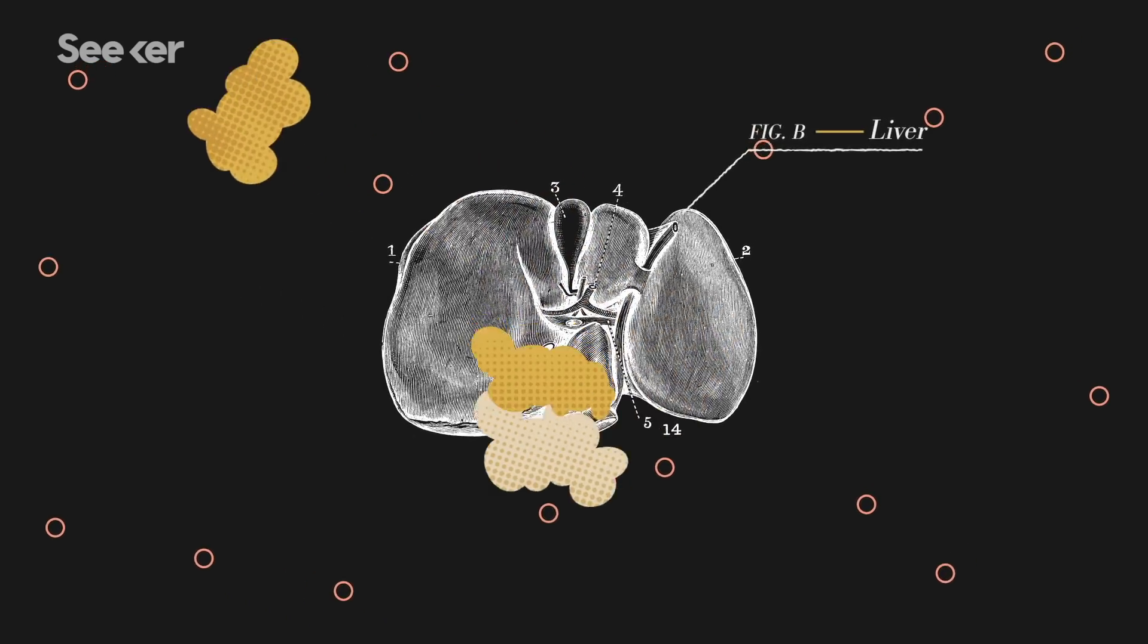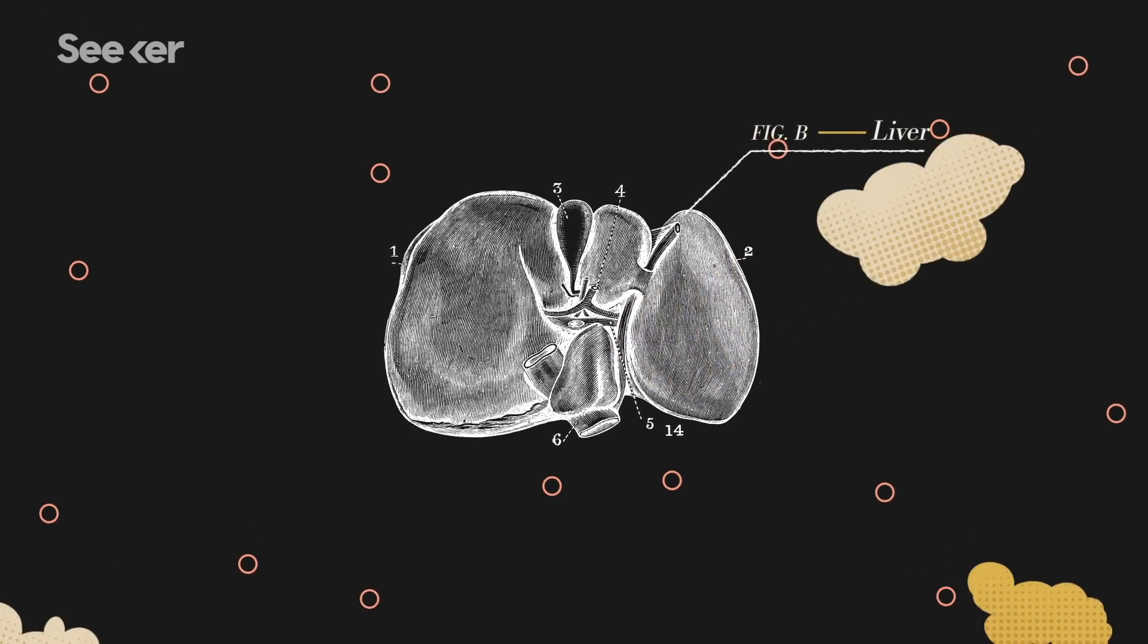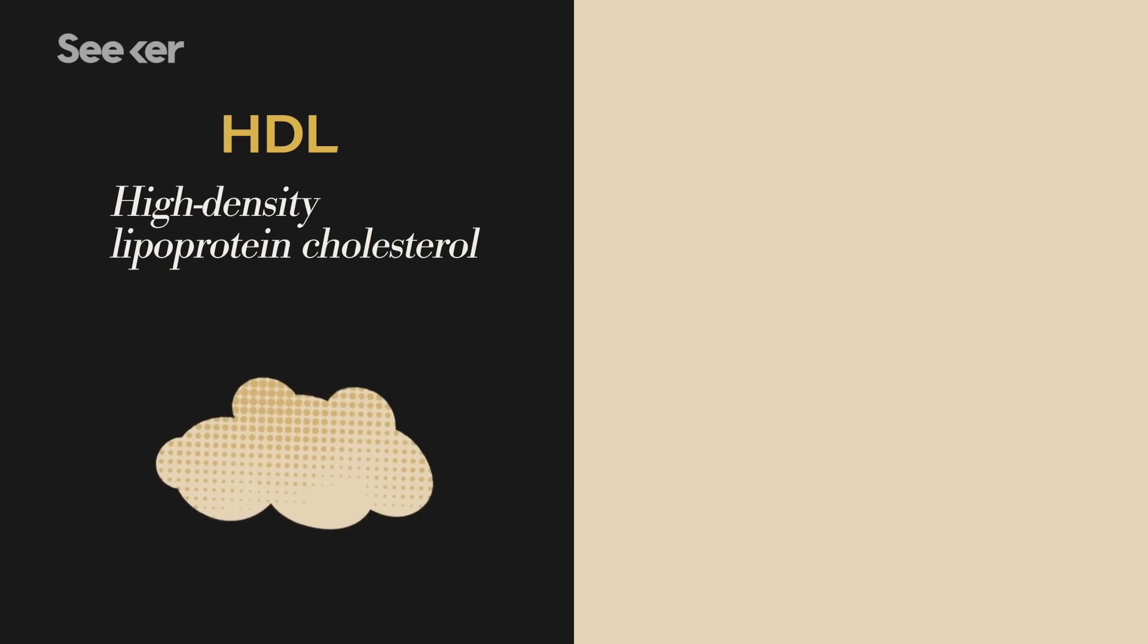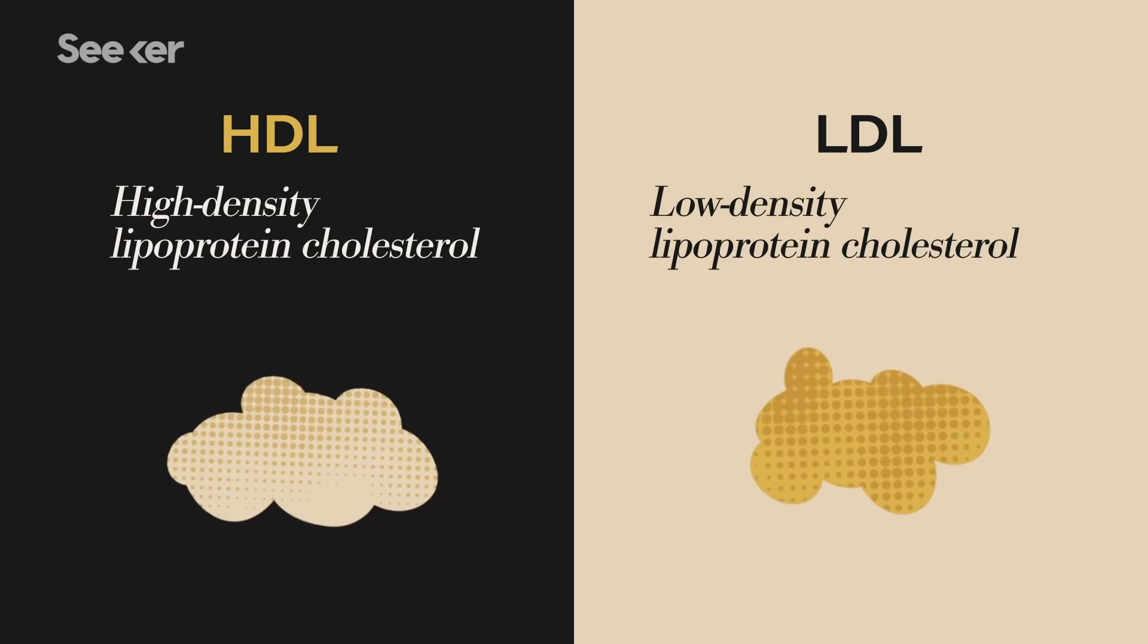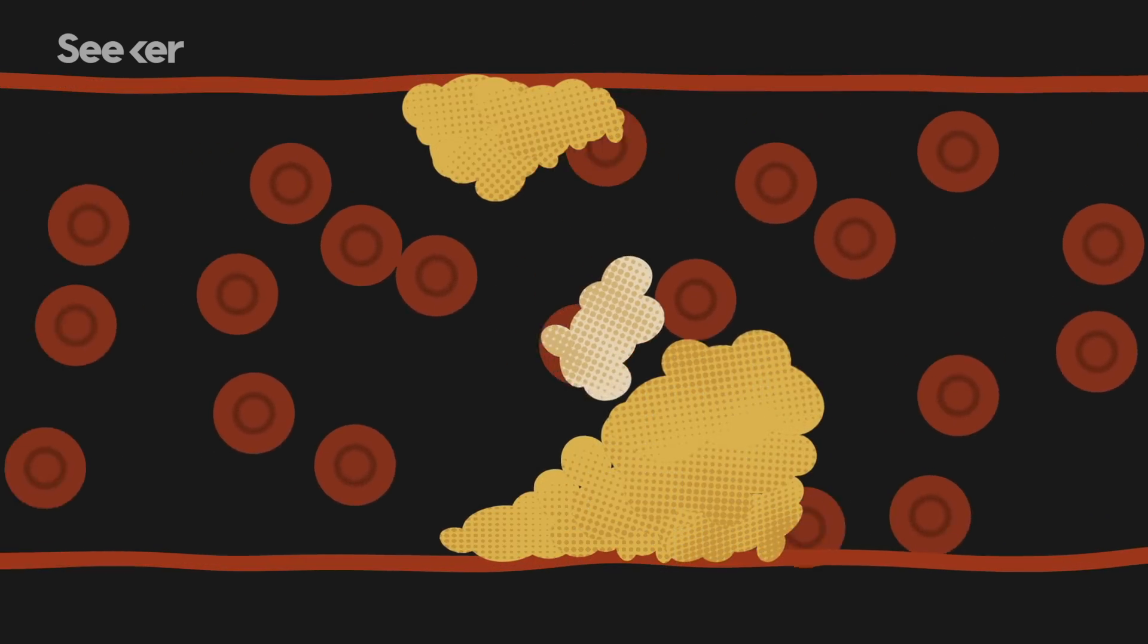Cholesterol is a type of fat made by our liver and that we get in part from our food. There are two main types of cholesterol: good cholesterol, HDL, and bad cholesterol, LDL. The good cholesterol helps keep the bad cholesterol in check.